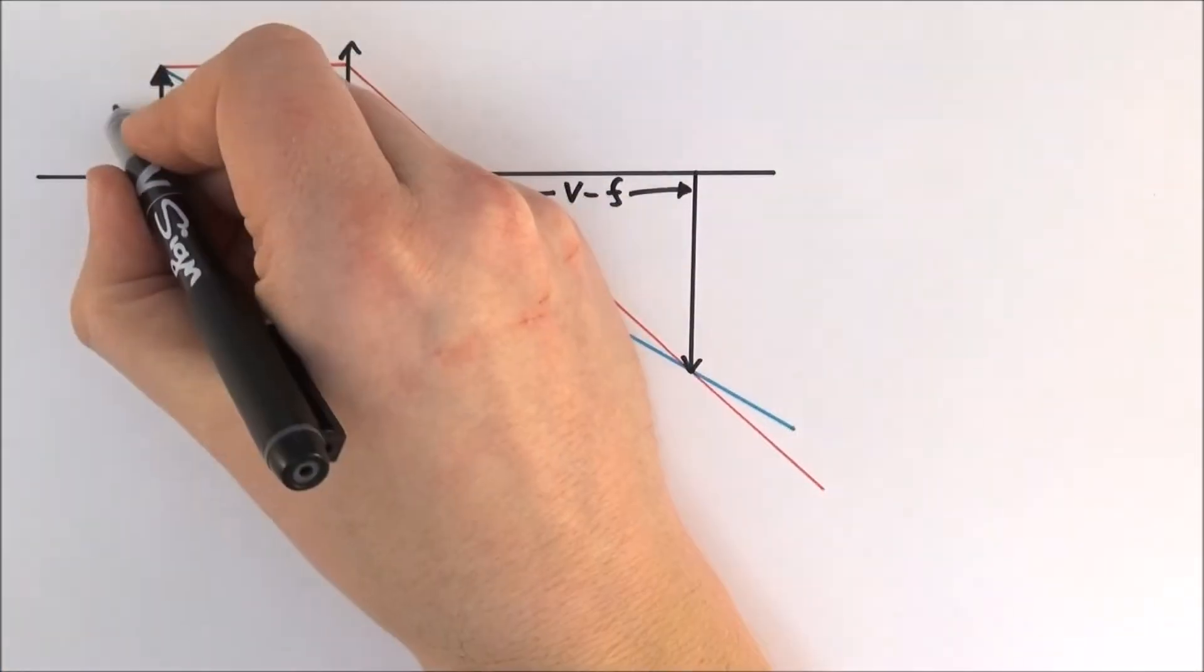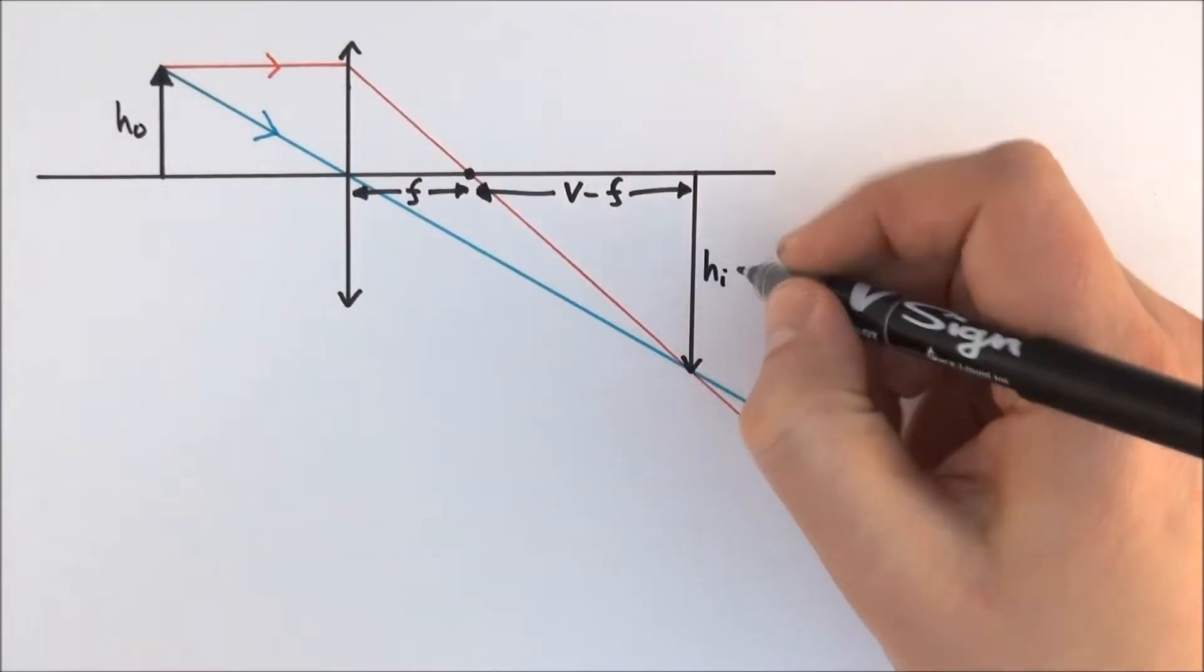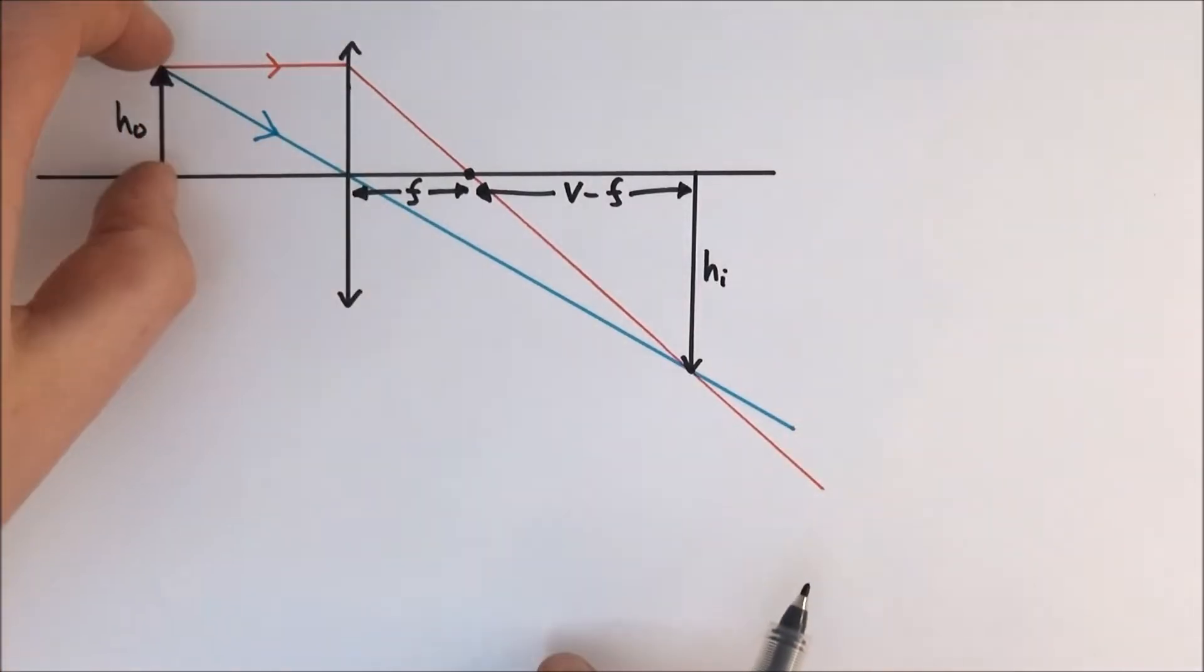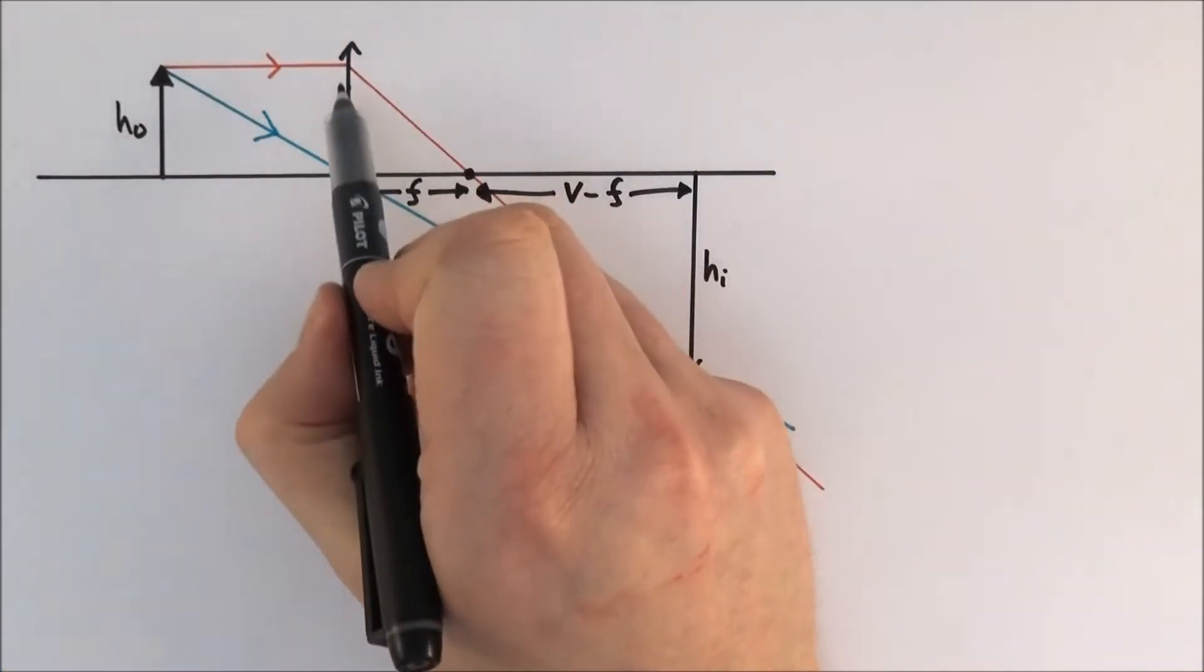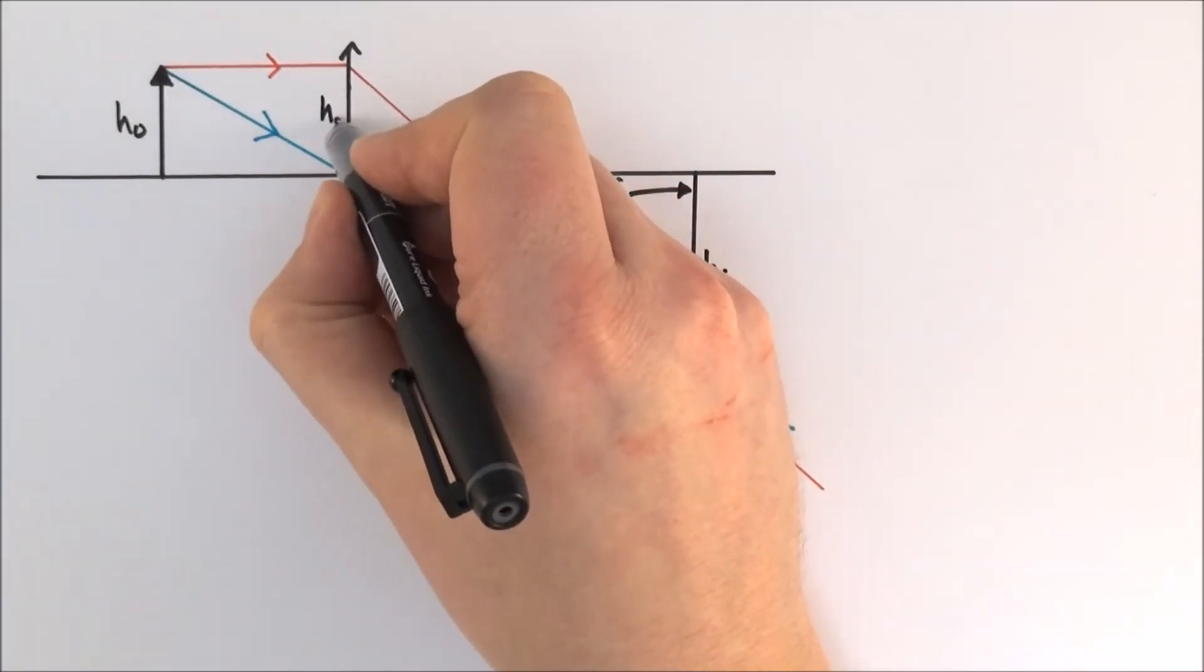Things that we can label include the height of the object and the height of the image. Now the other thing here is that if this is the height of the object over here then it must also be where this ray of light hits the lens. So this distance here is also equal to h naught.